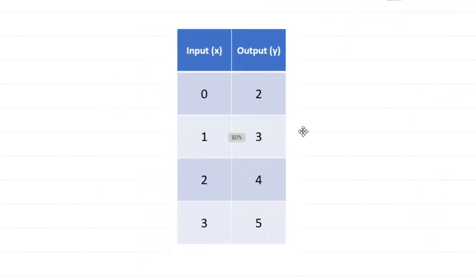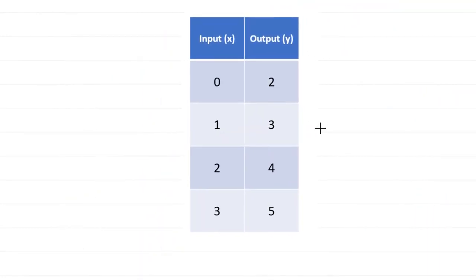I'm going to jump right into this first table. Remember, the idea is: is it a constant rate of change? Constant rate of change means for every particular change in the input x, there is the same particular change in y. Here, if we go from 0 to 1, x increased by 1.